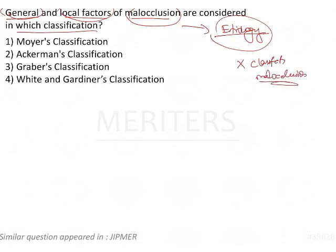Looking at the options — Moyers, Ackermans, Graebers, and Weitengardners — Ackermans' classification is a classification of the malocclusion itself. It is a three-dimensional classification given by Ackermans and Profit in all three planes of space. So Ackermans can be eliminated.